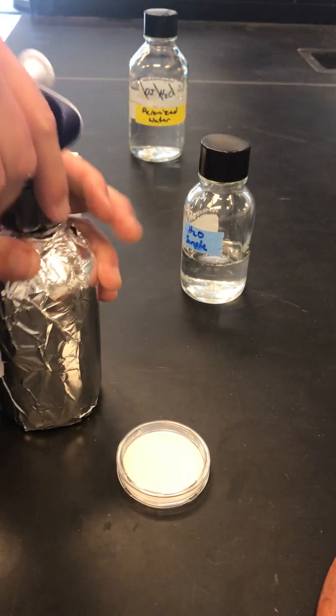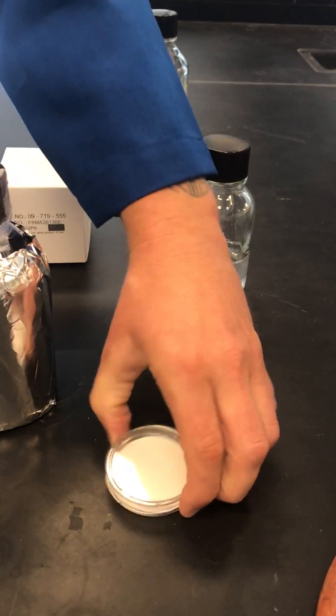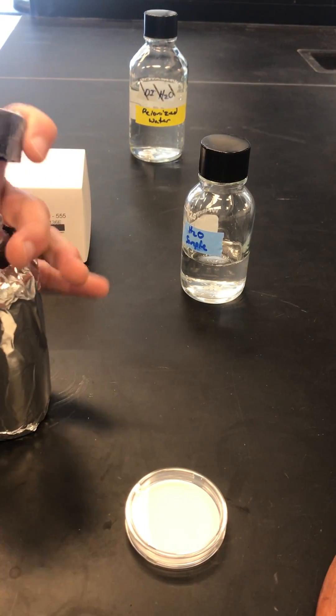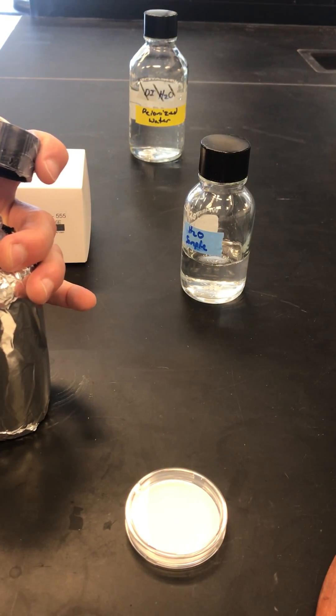What we're going to do with this filter is take one of these dishes with a pad in the bottom and inoculate it with two mils of endo broth.